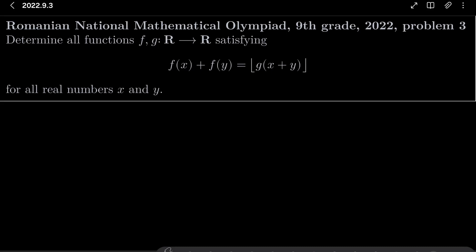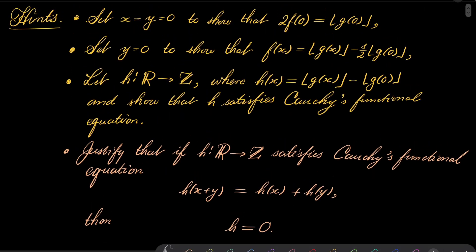Here are my hints for this problem. First, set x and y to be 0 to show that 2f(0) equals the floor of g(0). Then let y be 0 to show that f(x) equals floor of g(x) minus one half floor of g(0). Now let h be the following function: h(x) equals the floor of g(x) minus the floor of g(0). It goes from the set of real numbers into the set of integers. Show that it satisfies the Cauchy functional equation, and justify that the only such function mapping into the integers is the zero function. Give this problem a try and I will see you in just a minute.